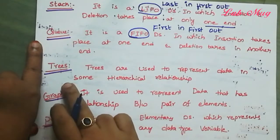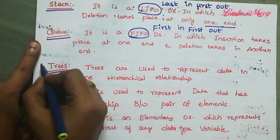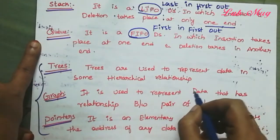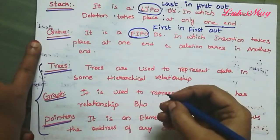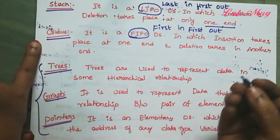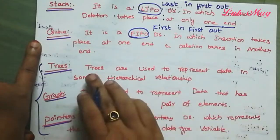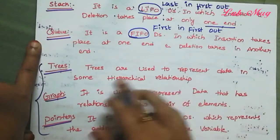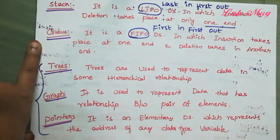Next are Trees, Graphs, and Pointers. These three are classified as non-linear data structures, where memory is not allocated in a continuous manner. Trees are used to represent data in hierarchical relationships. Graphs are used to represent data that has relationships between pairs of elements.